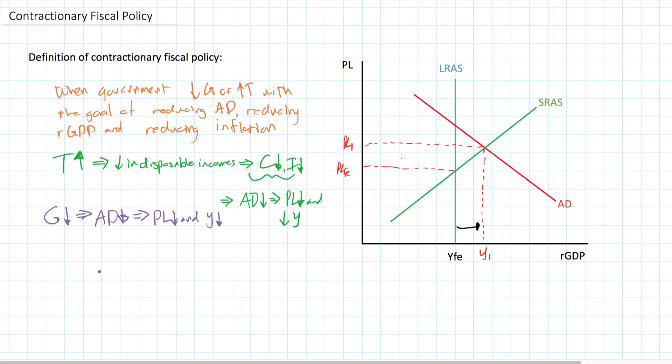In this way, contractionary fiscal policy can be used to reduce the level of aggregate demand and achieve the macroeconomic objectives of lower inflation. They'll bring down the inflation rate. Full employment. We'll get back to full employment because this economy was producing beyond full employment, which sounds great, but it's not because it leads to cost-push inflation and stable economic growth.